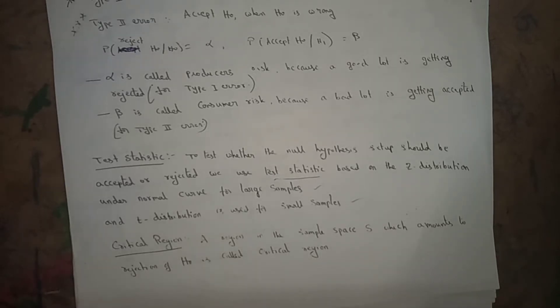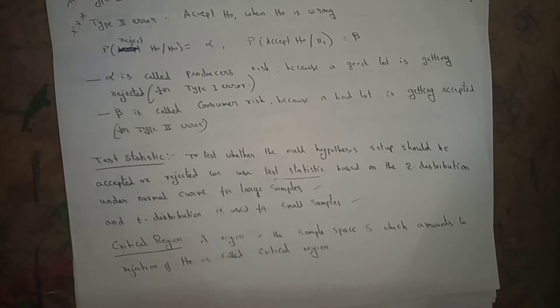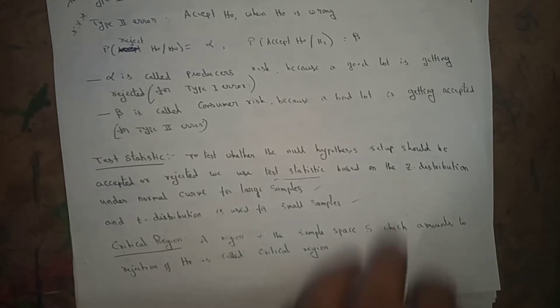This is a continuation from the previous lecture. A region in the sample space S which amounts to the rejection of H0 is called the critical region. H0 is the null hypothesis — a definite statement about a population parameter used for applying tests of significance. The region amounting to rejection of H0 is called the critical region.